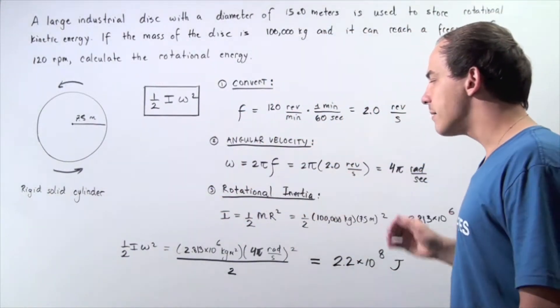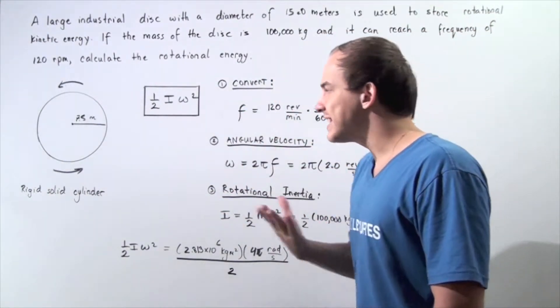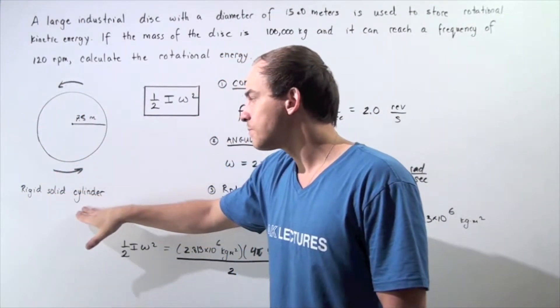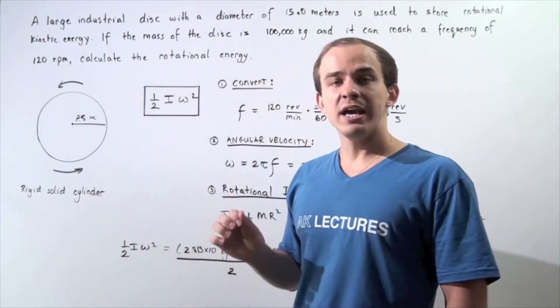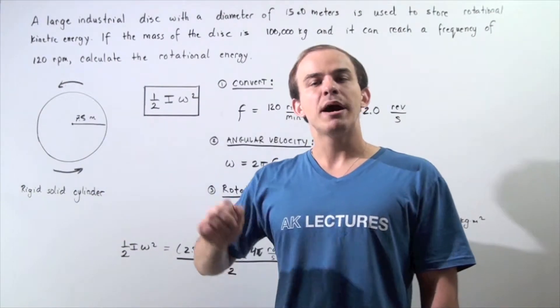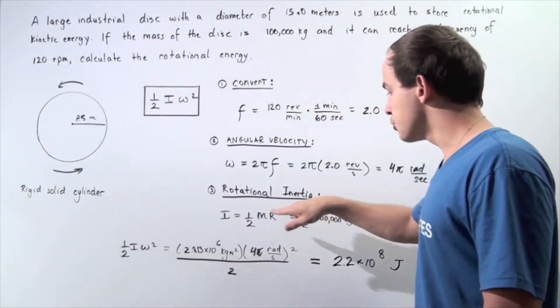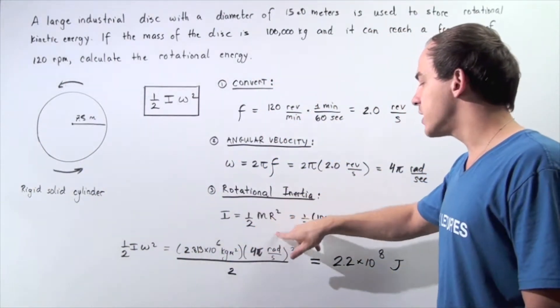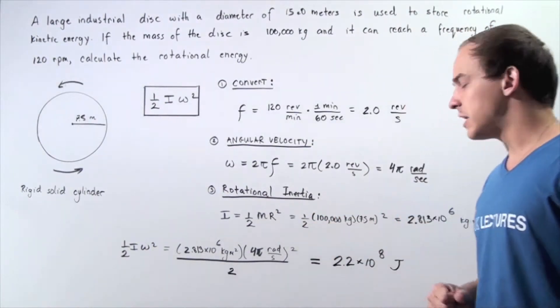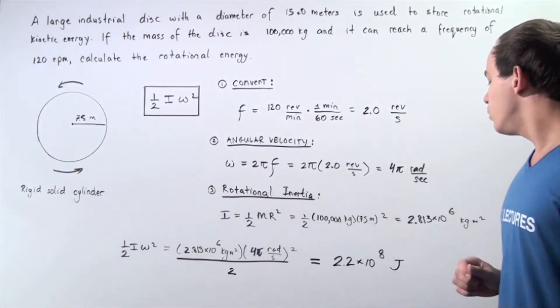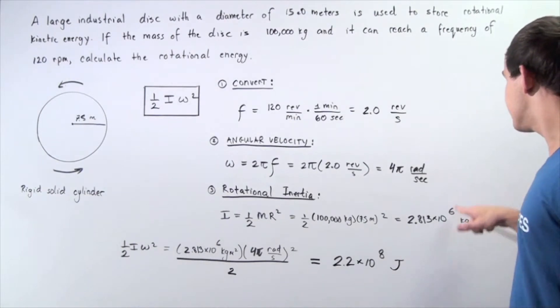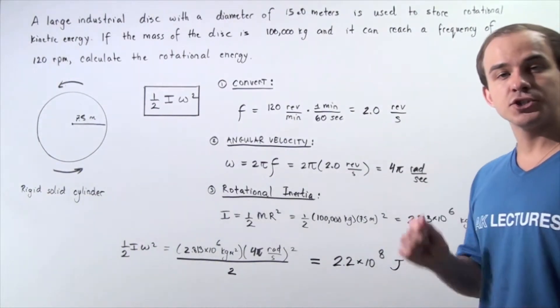Now, in the third step, recall that in order to calculate the rotational inertia of our rigid solid cylinder, we have to use the formula one half multiplied by mass multiplied by radius squared. So, one half mass times radius squared is equal to one half, 100,000 kilograms multiplied by 7.5 squared. We get approximately 2.813 times 10 to the 6 kilograms times meters squared.